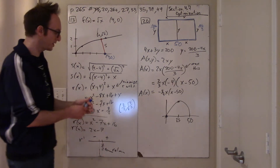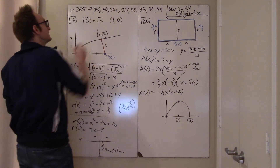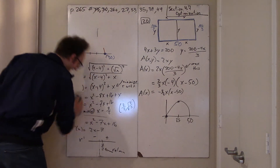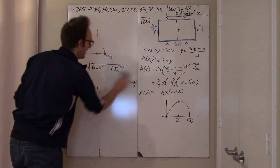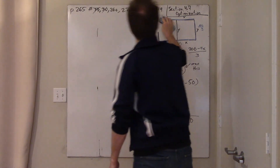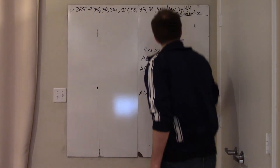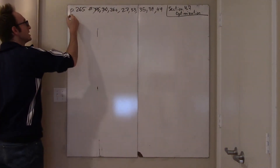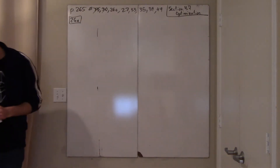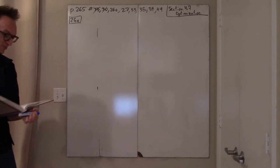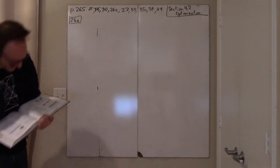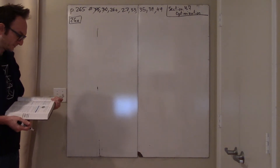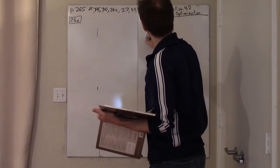Those first two problems are relatively easy — you might have done them without calculus, as in pre-calc. Now things get harder. The hard part isn't the calculus; it's reading comprehension, drawing pictures, and geometry. Let's do 26a: find the area of the largest isosceles triangle that can be inscribed in a circle of radius 4. We have a circle of radius 4 and we inscribe an isosceles triangle inside it.